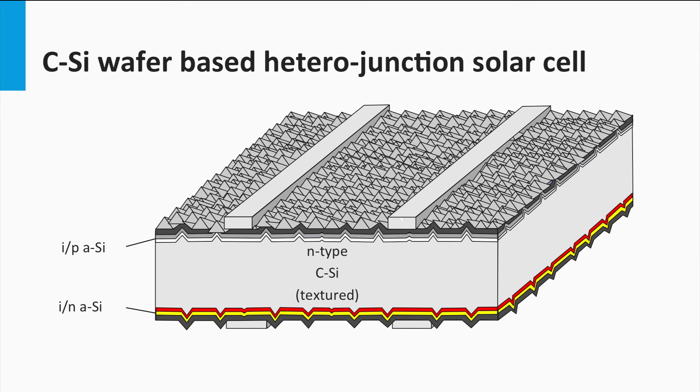At the rear surface a similar junction is made. First, a thin layer of intrinsic amorphous silicon is deposited on the wafer surface, indicated by the red. On top of the intrinsic layer an N-doped amorphous silicon is deposited, indicated by the yellow color.